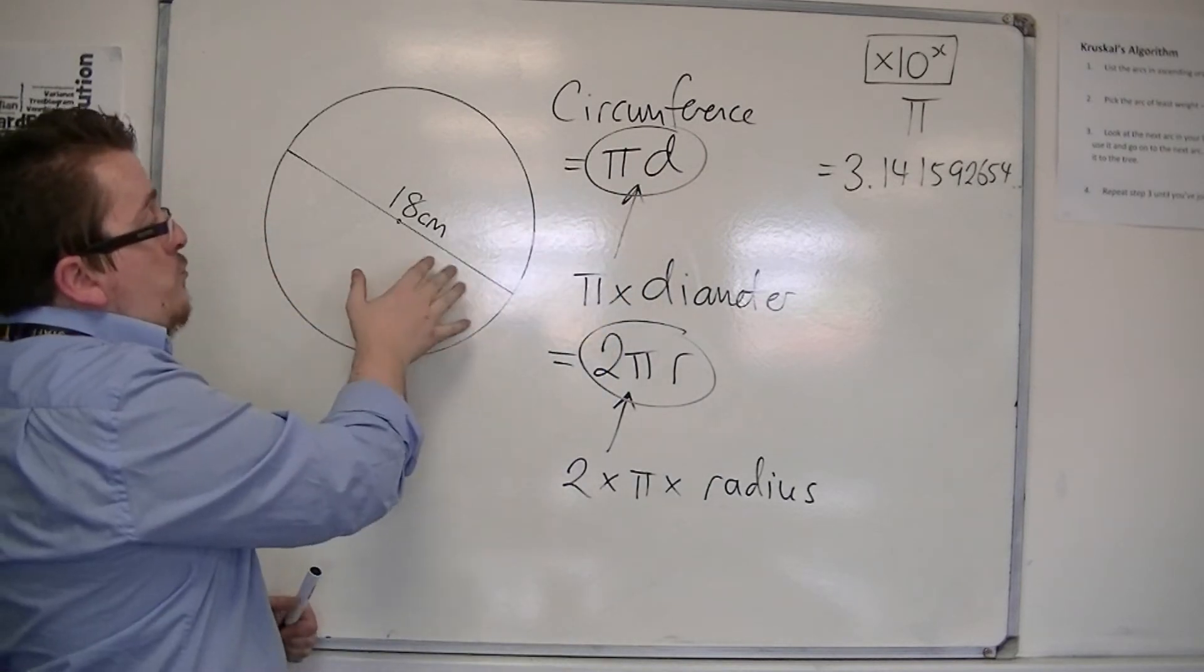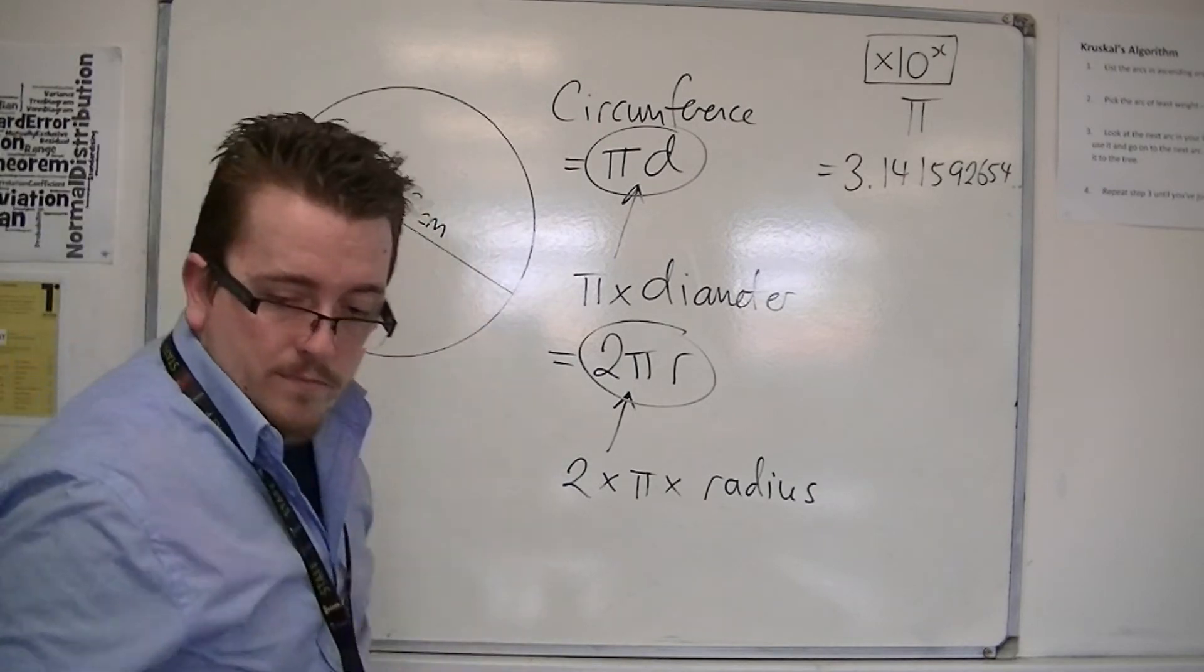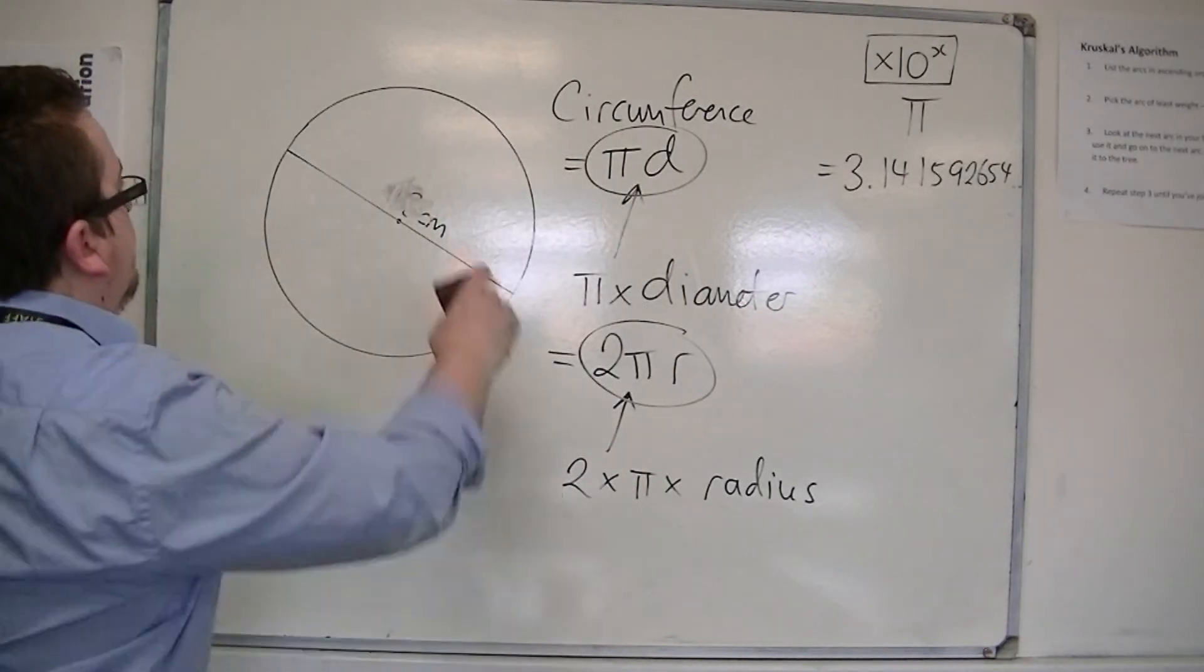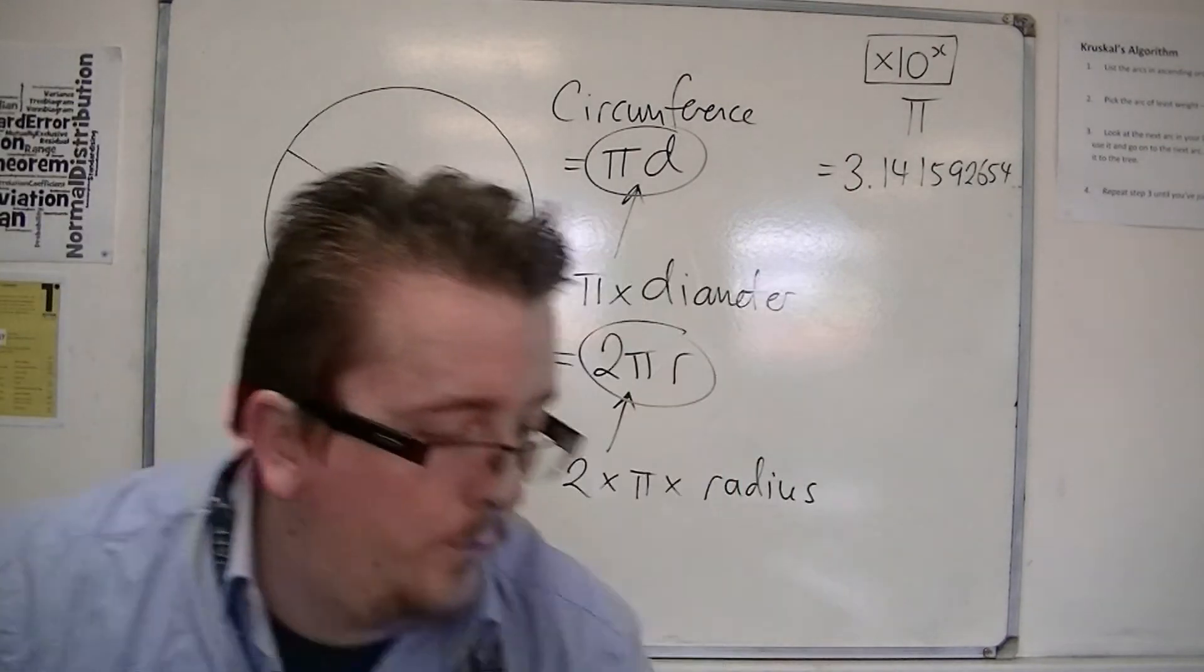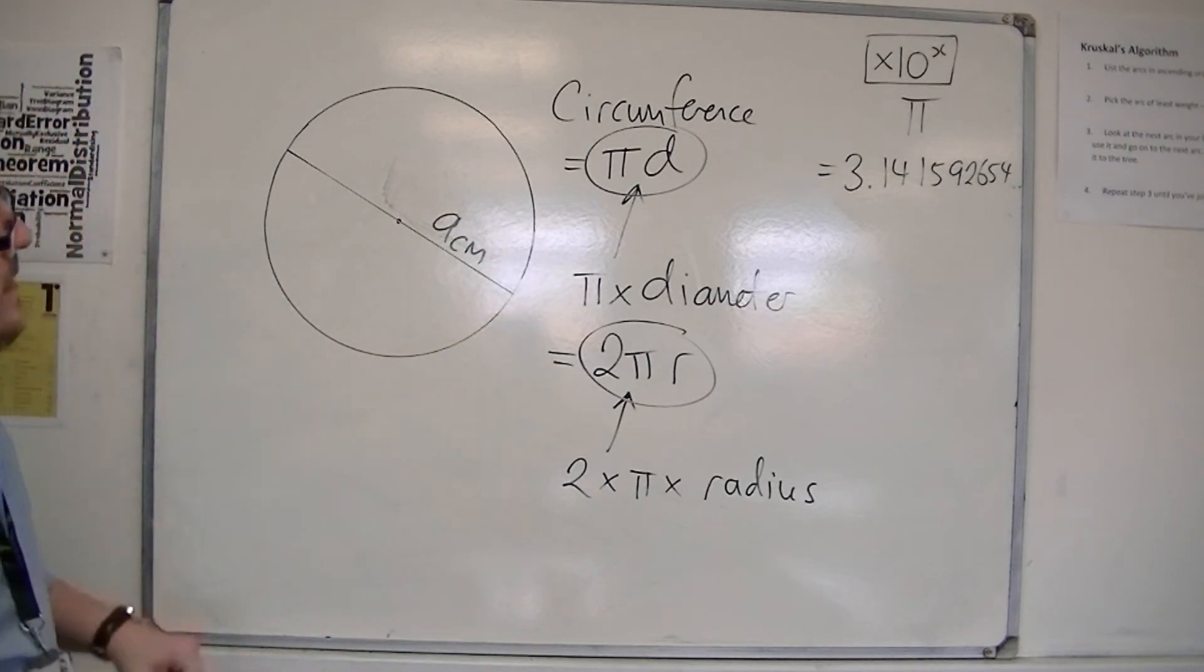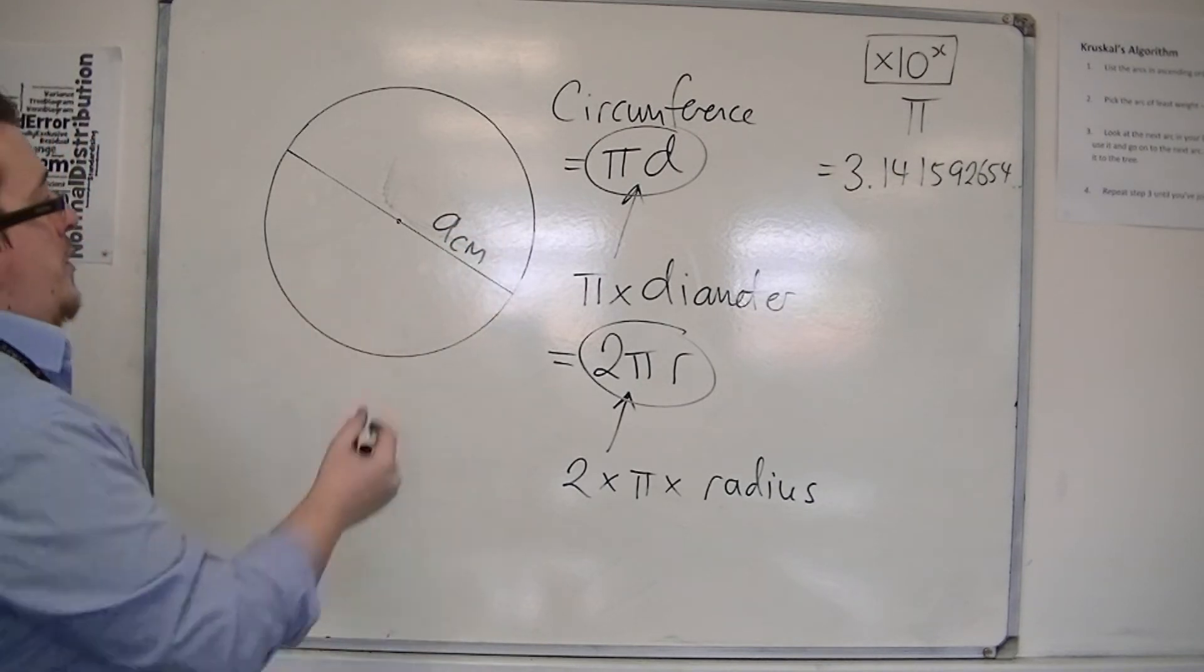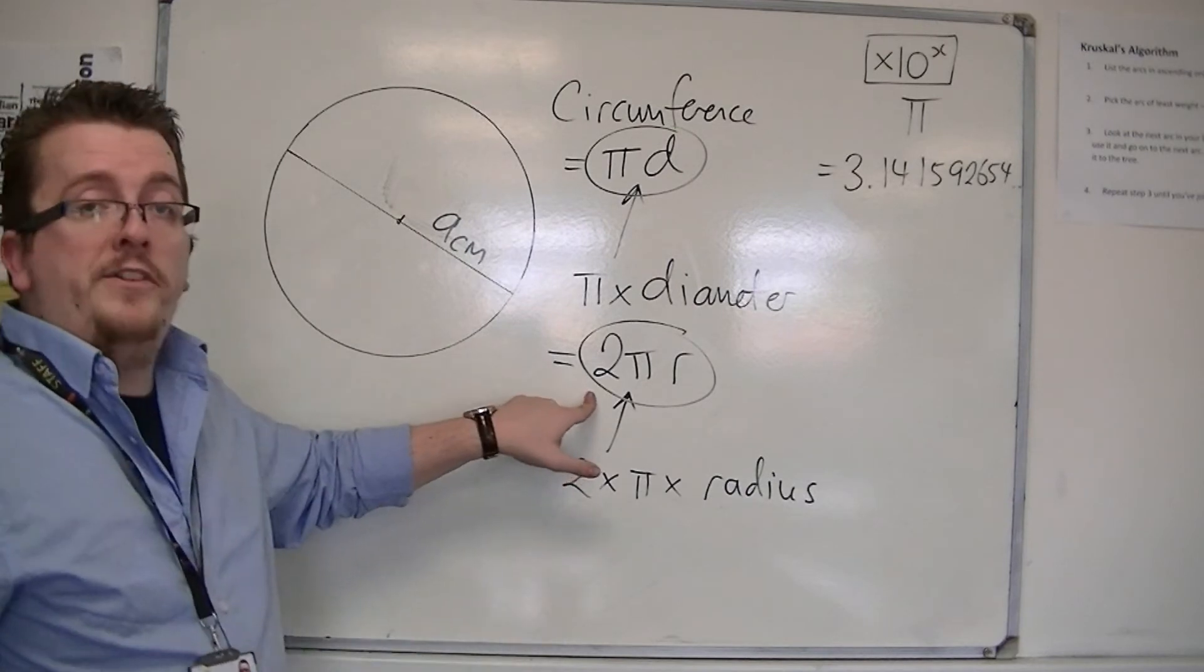But if I've been given the radius, let's say the radius was 9 centimeters. Then, because I've got just the radius here, then I might as well use 2 times pi times r.